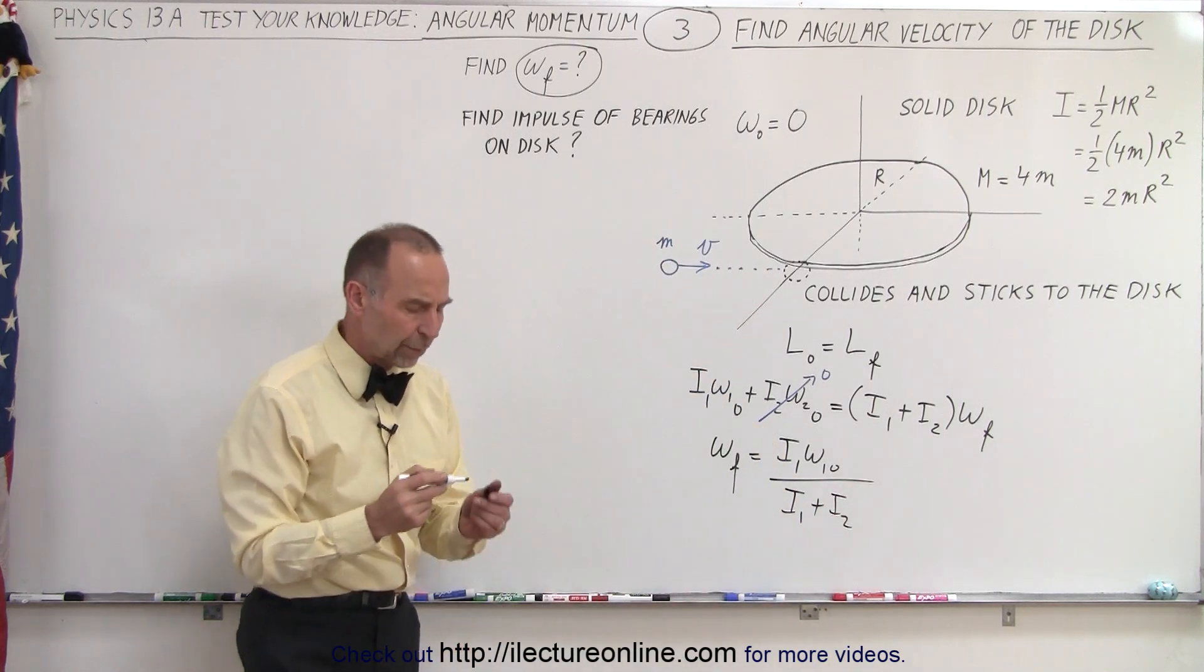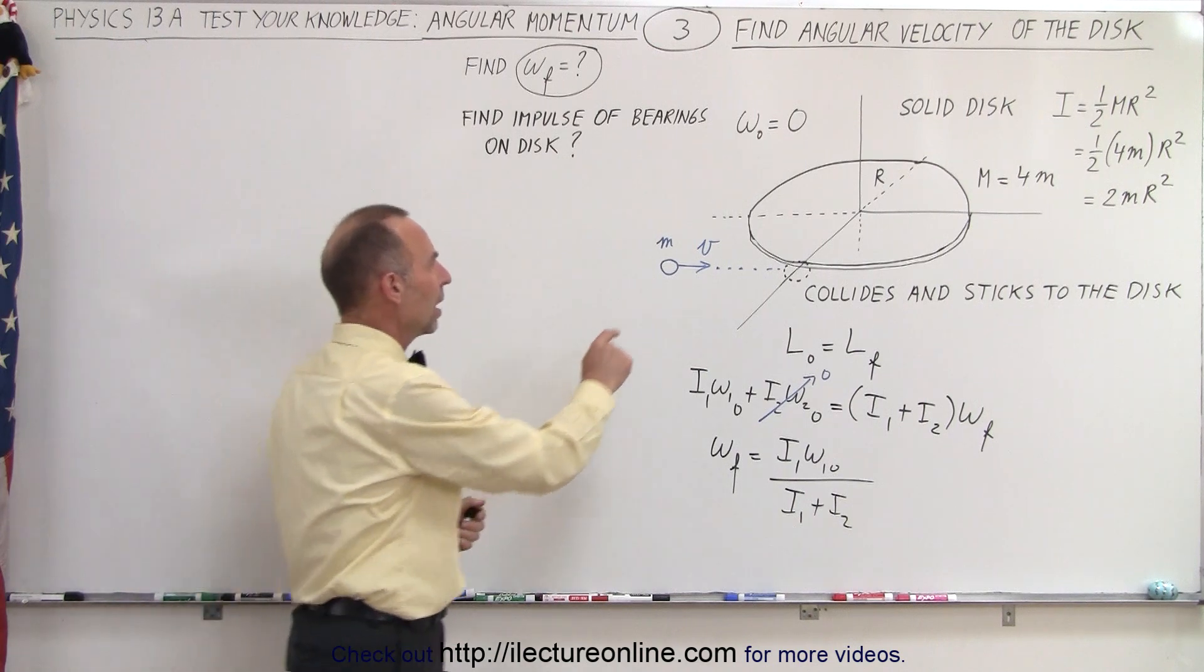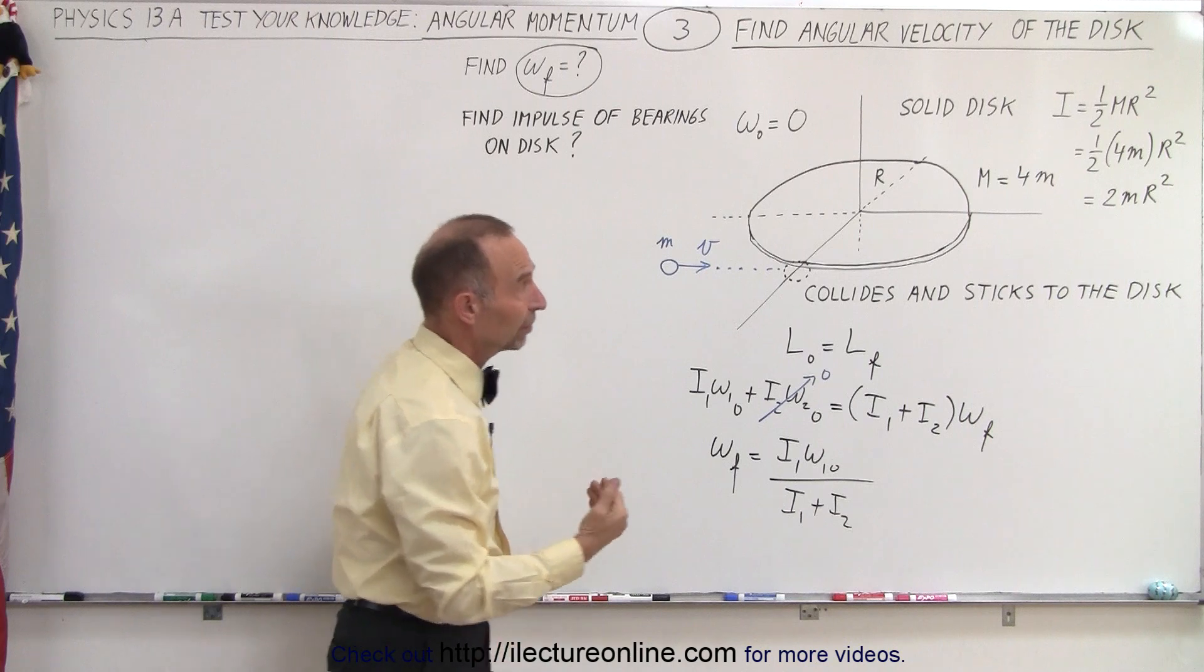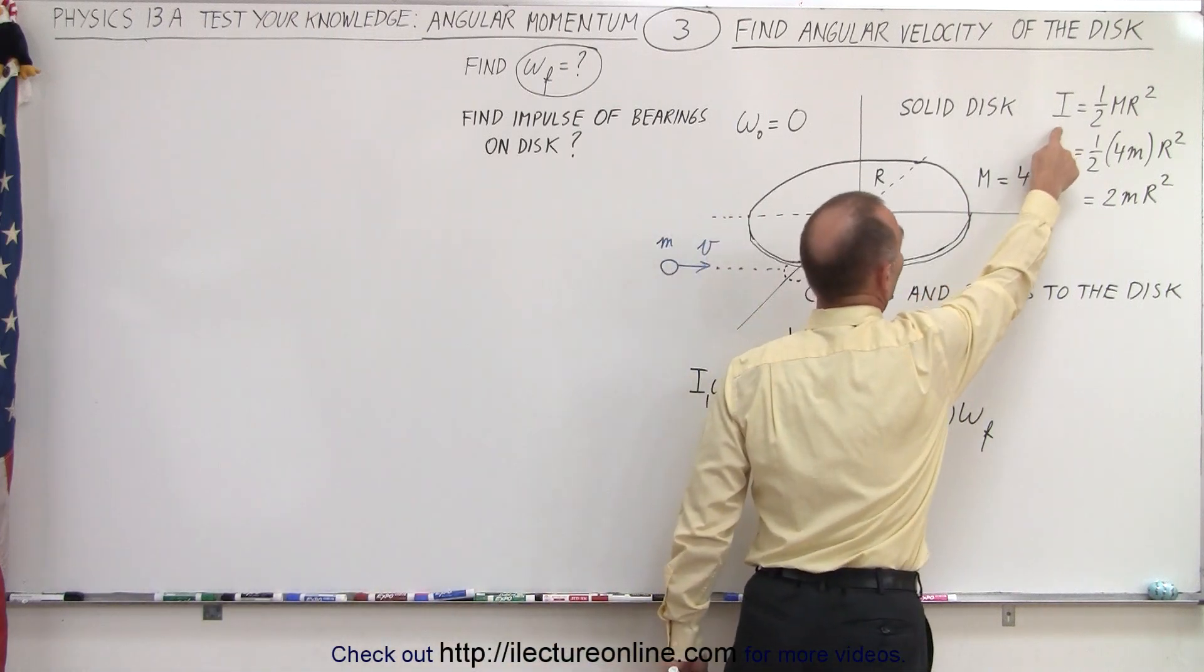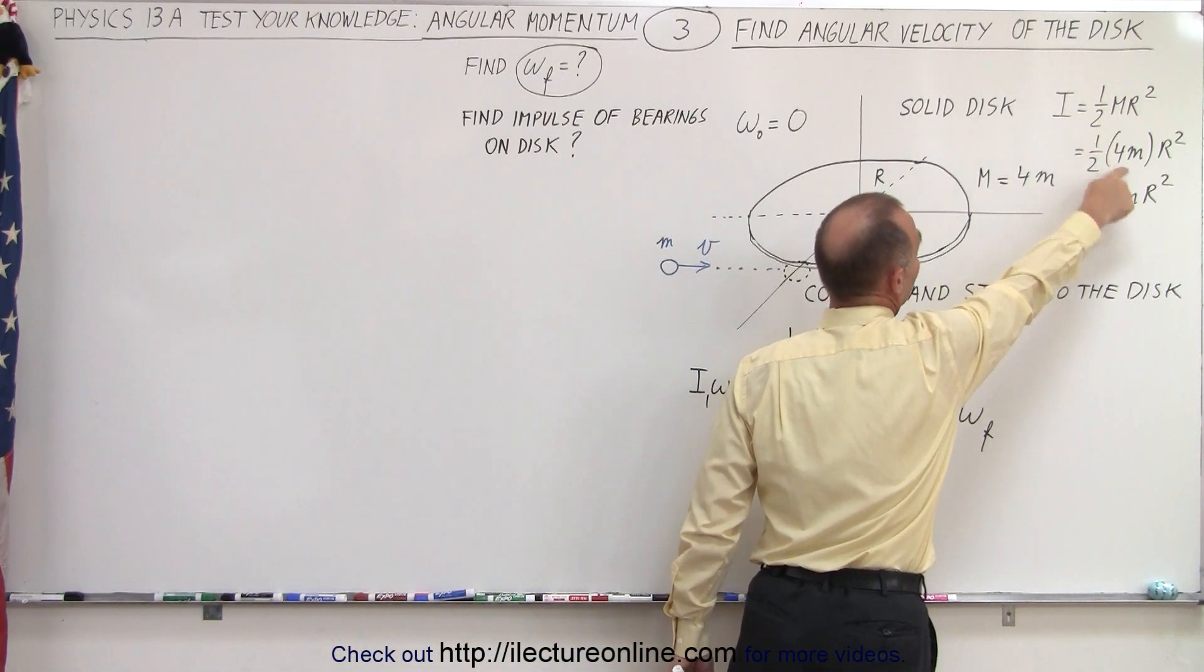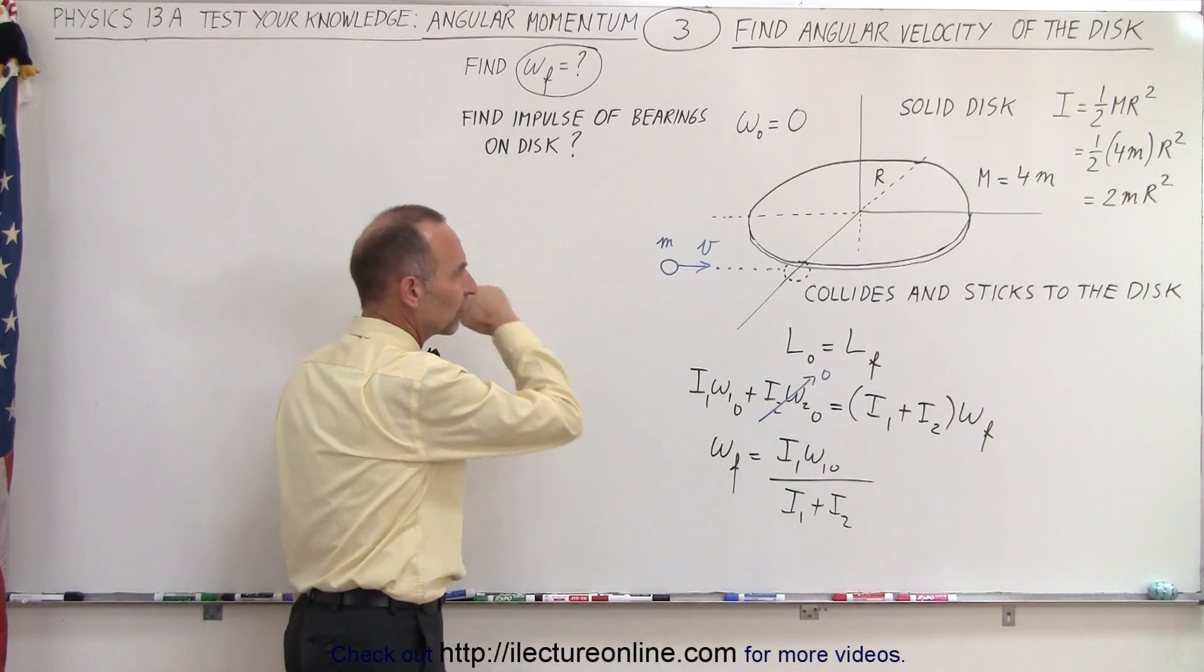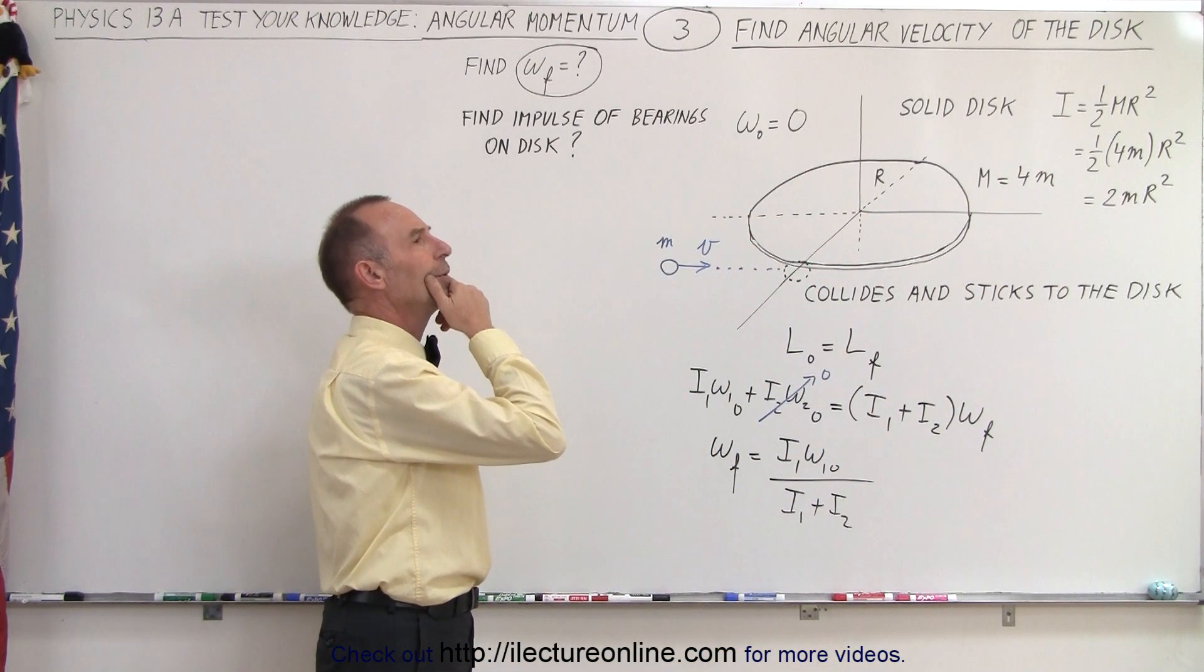Now you may say, well, what is the I of the object m traveling in a straight line path? Well, it's not so hard to find the I of the solid disk—that's ½mr², m being 4 small m. But what about the small m here traveling in a straight line? What is the moment of inertia there?